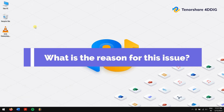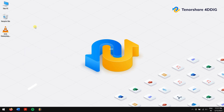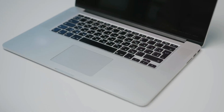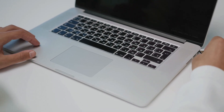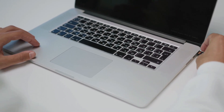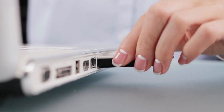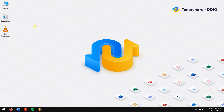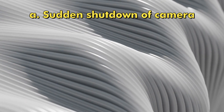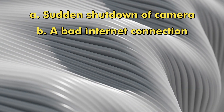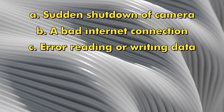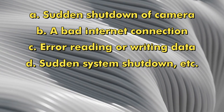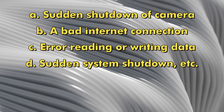What is the reason for this issue? Video corruption can be due to the video file itself, its medium of storage, or even the device it is playing on. There can be many reasons for your video file not playing. Some of the reasons for video file corruption include sudden shutdown of the camera, a bad internet connection, error reading or writing data, sudden system shutdown, etc.